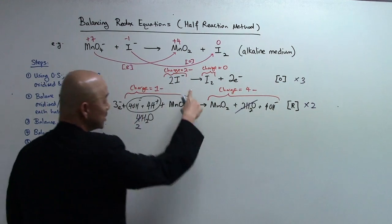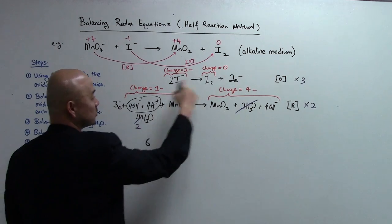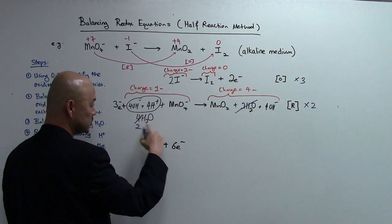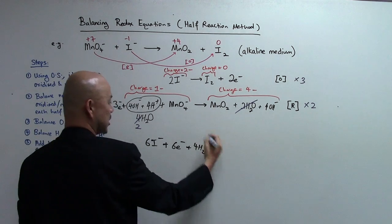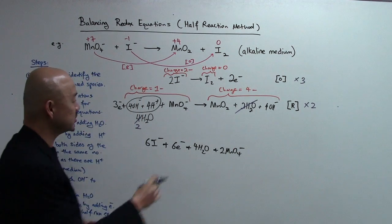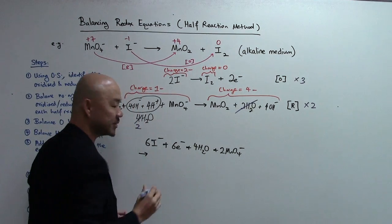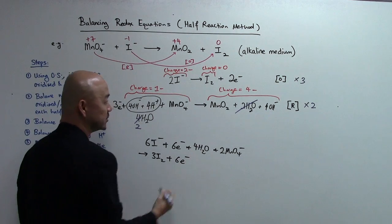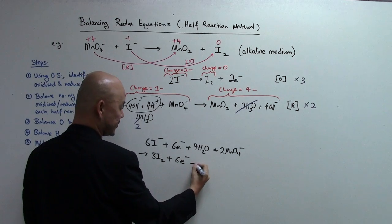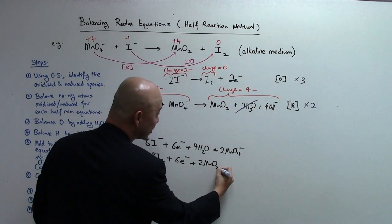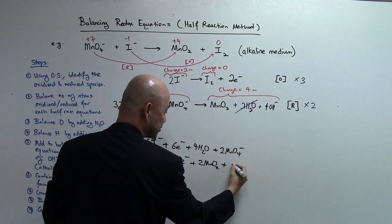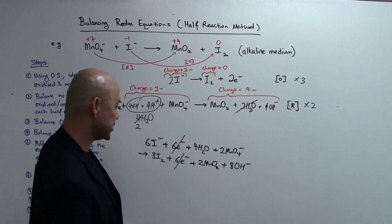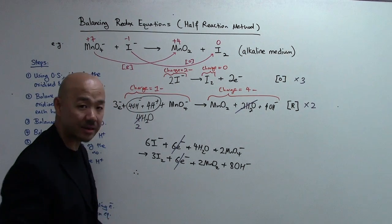Working through the combined equation: from the oxidation half times 3, the left side gives 6I-, and the right side gives 6 electrons and 3I2. From the reduction half times 2, the left side gives 2MnO4- plus 4H2O, and the right side gives 2MnO2 plus 8OH- plus 6 electrons. The 6 electrons cancel on both sides. Checking for any further cancellations — that's all.